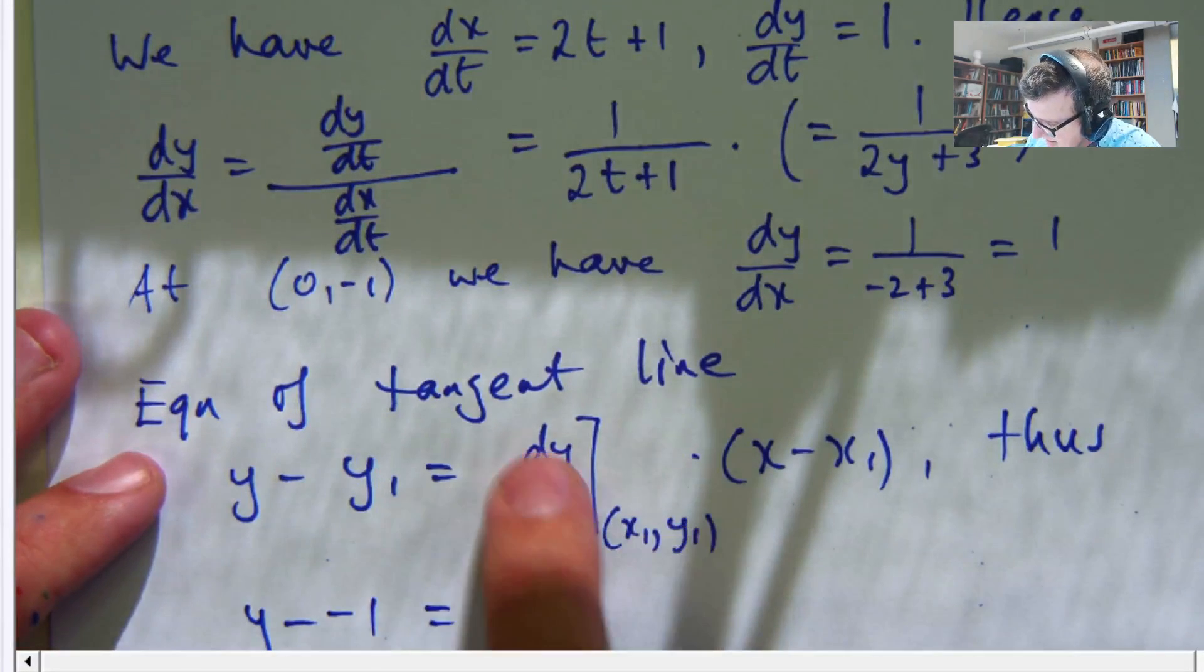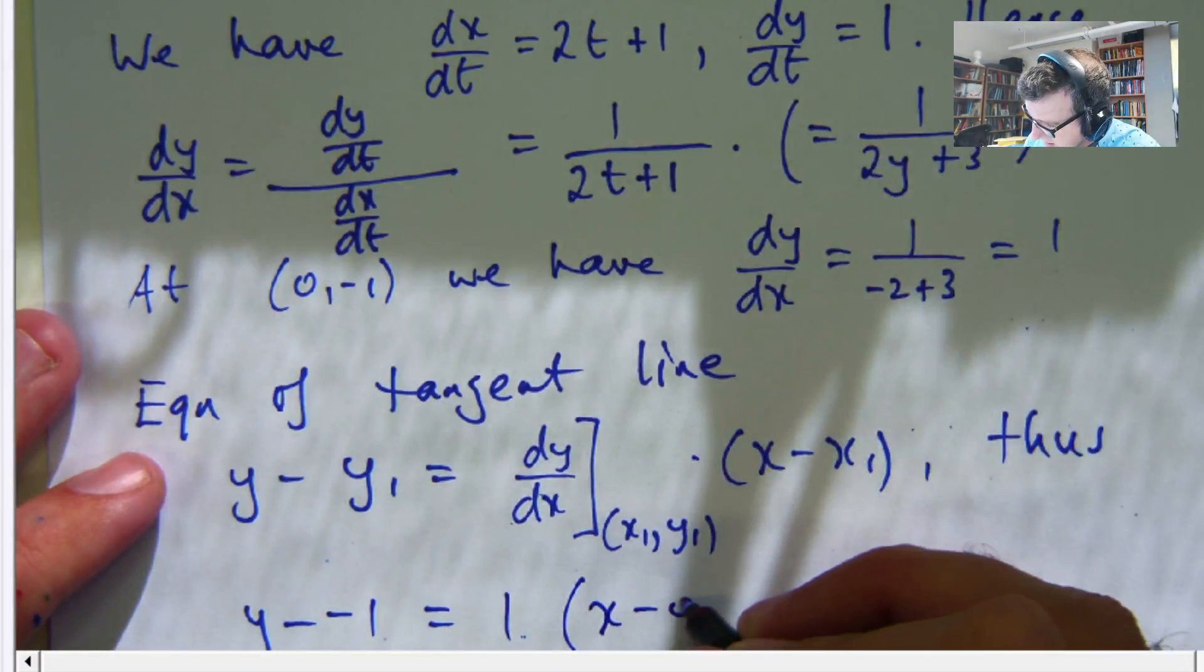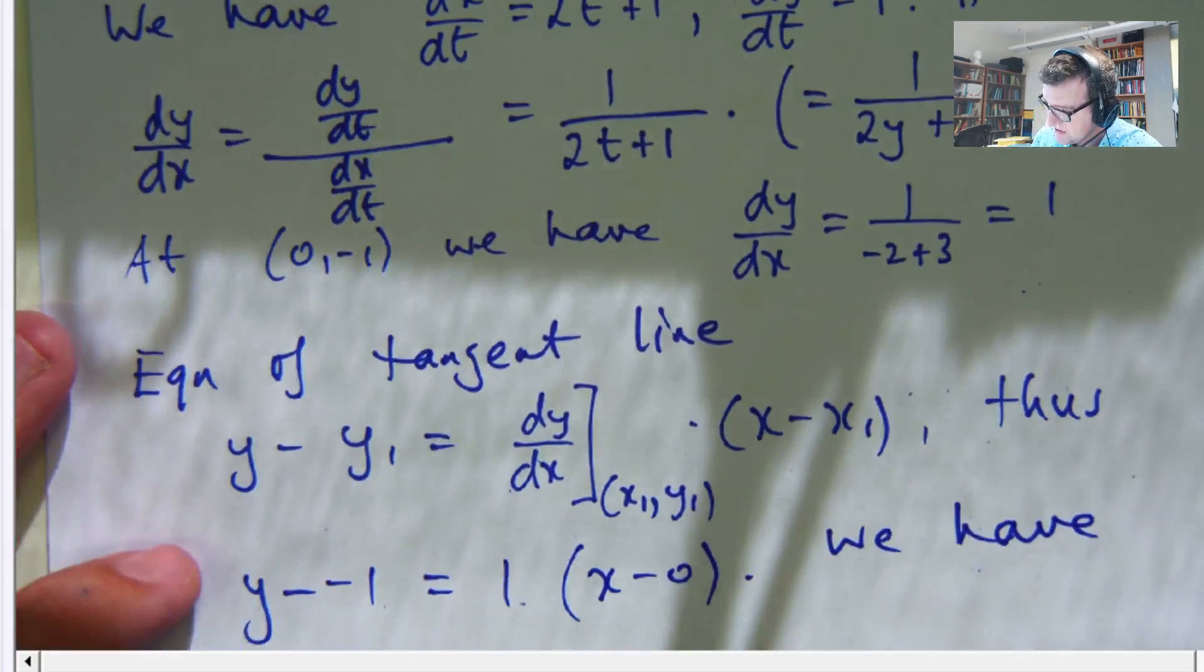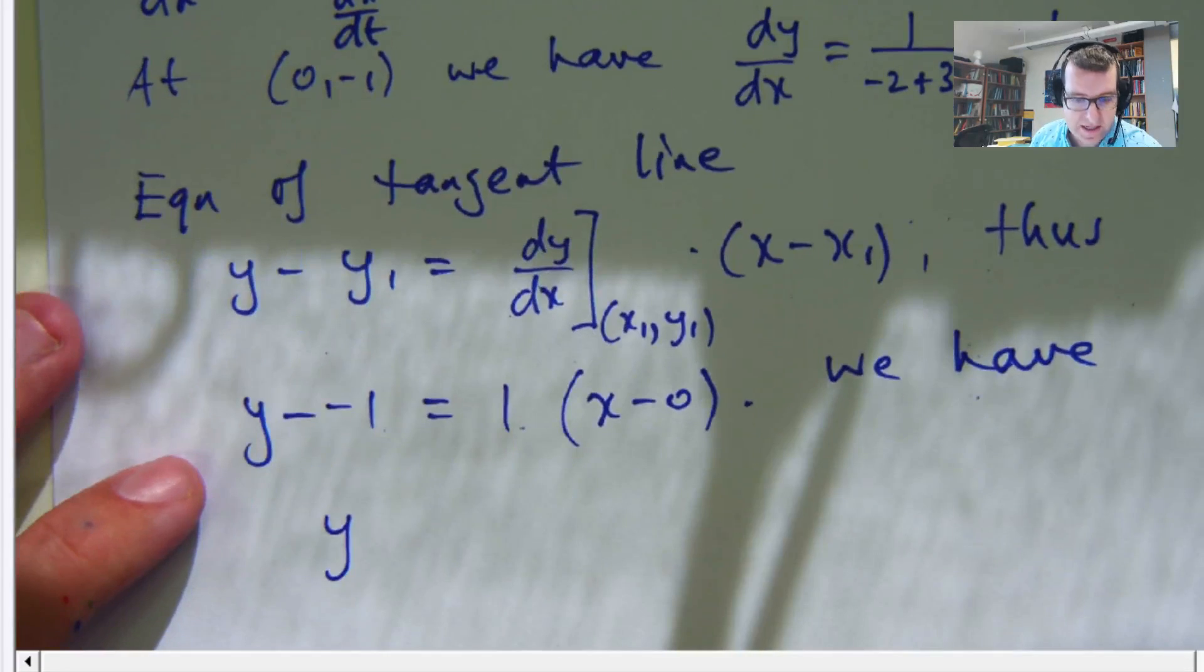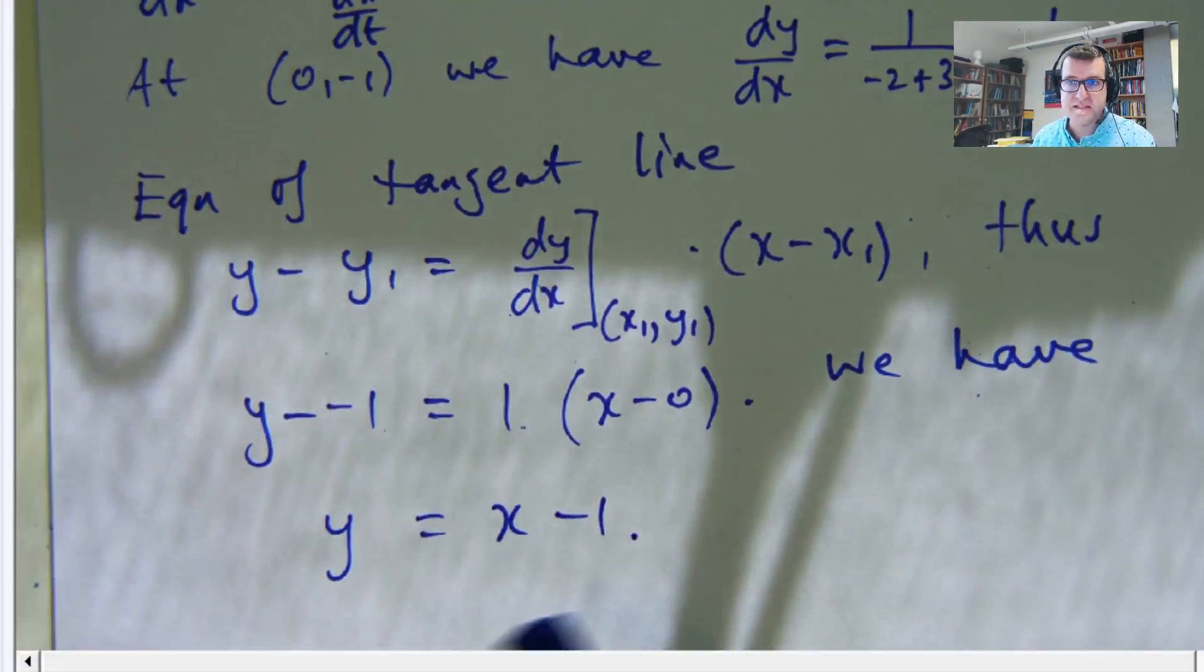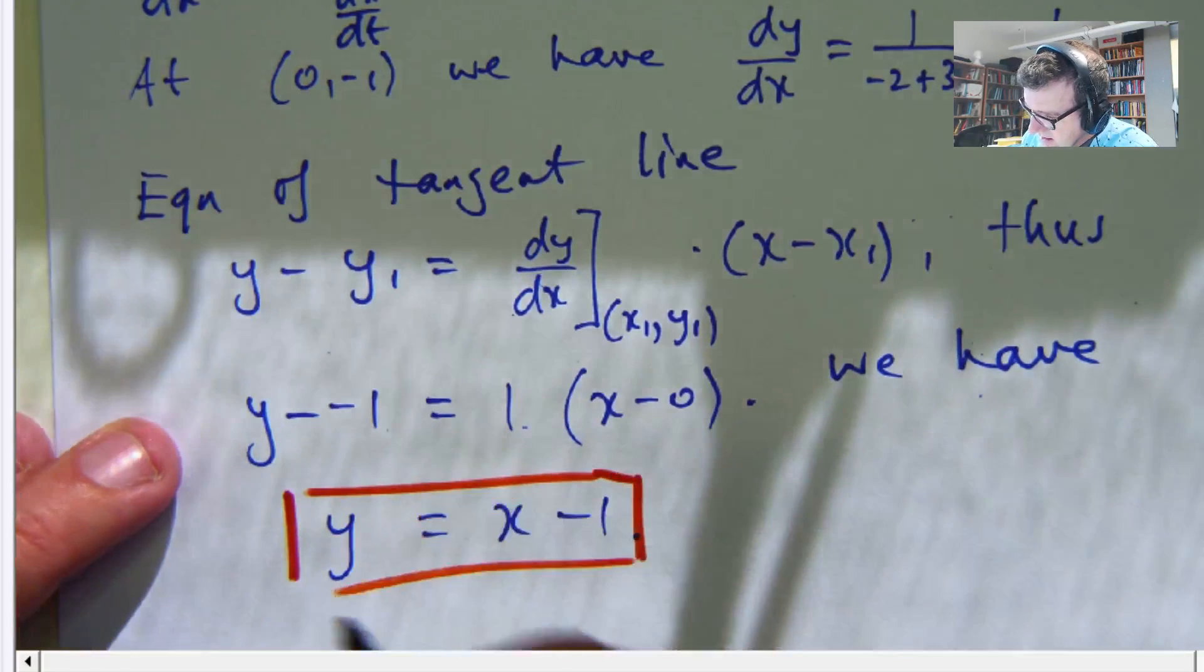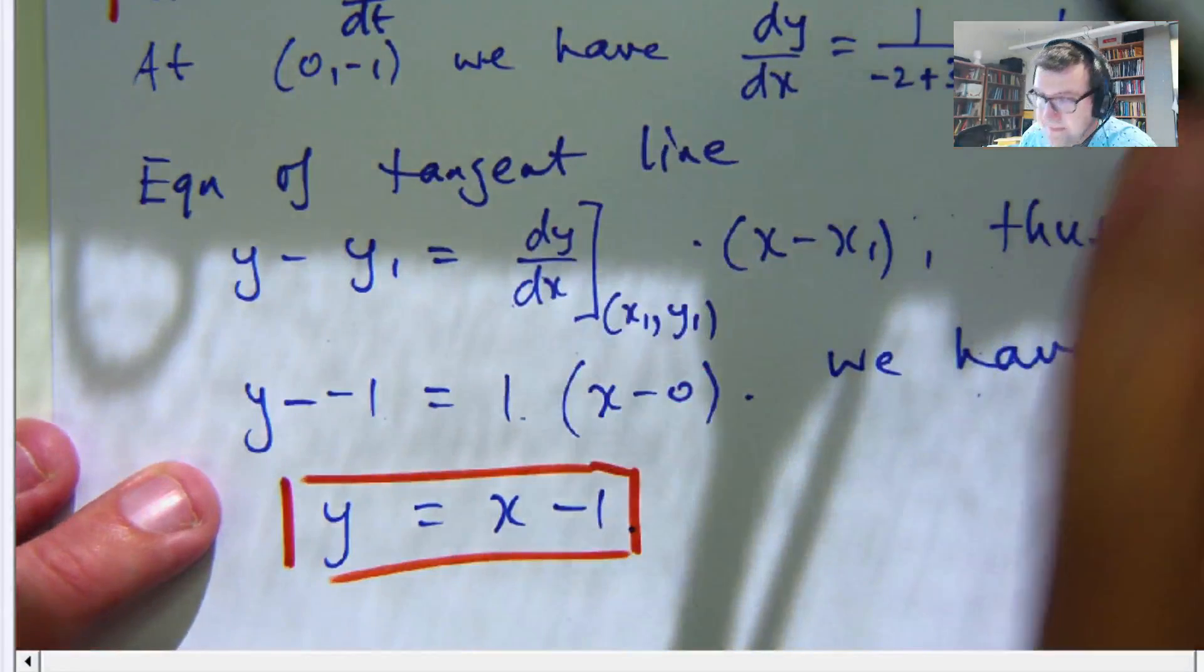So that is 1 and that is 0. So it's going to be y, let me push that up, equals x minus 1. So this is the equation of our tangent line.